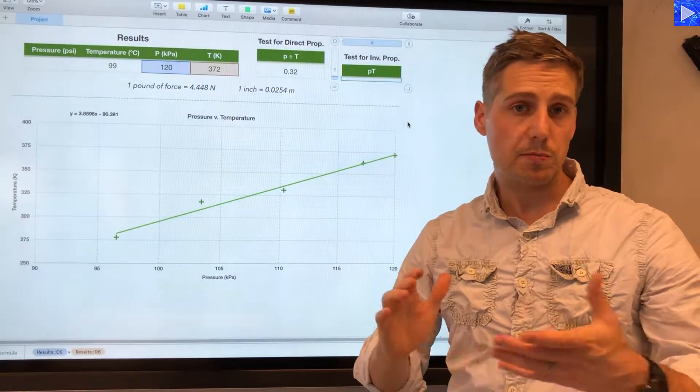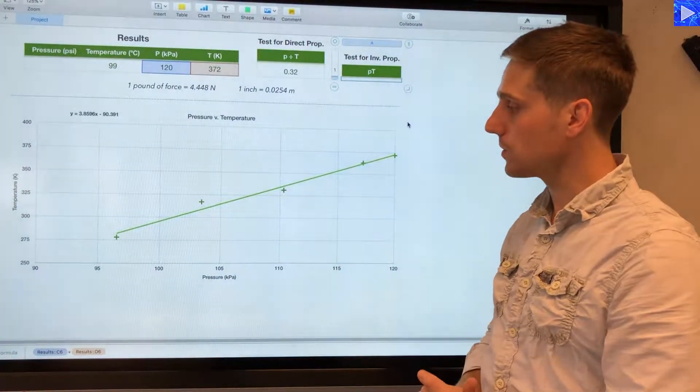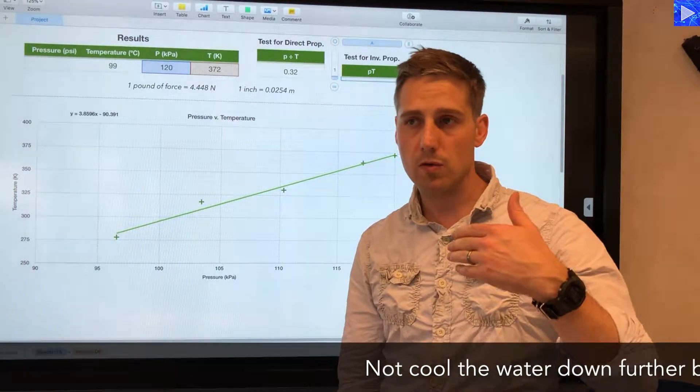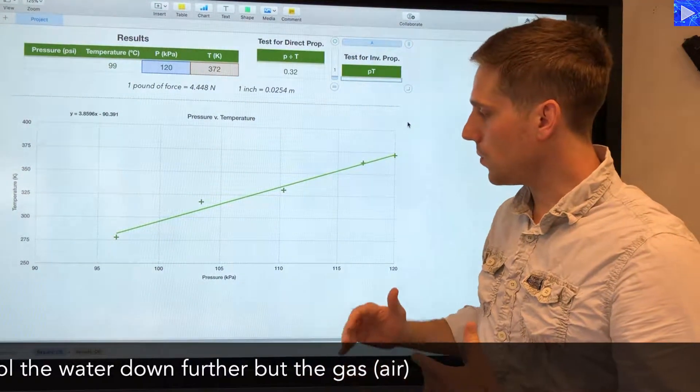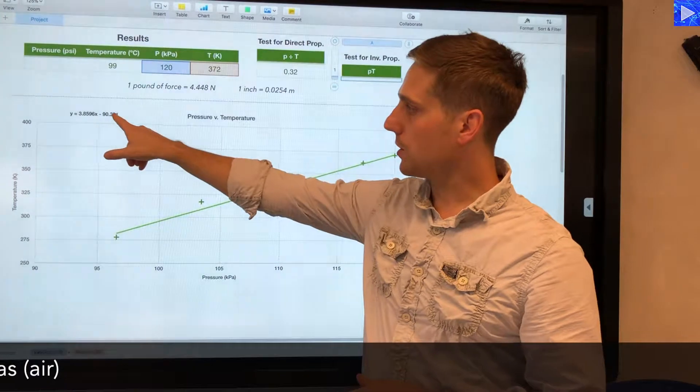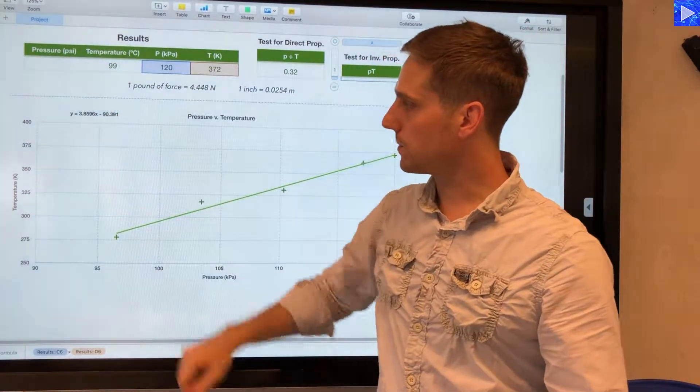One caveat to this is we've only got five data plots and it's quite a short range. We'd want to use a pressure vessel so that we could have a larger range of temperatures and pressures, and probably go colder as well by cooling the water down further.